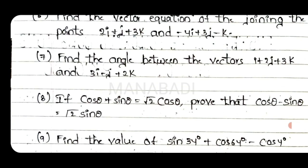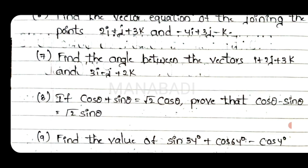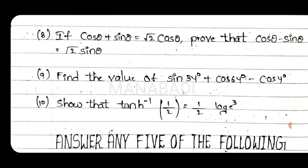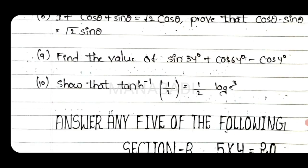Seventh question: Find the angle between the vectors i plus 2j plus 3k and 3i minus j plus 2k. Eighth question: If cos theta plus sin theta equals under root 2 cos theta, prove that cos theta minus sin theta equals under root 2 sin theta. Ninth question: Find the value of sin 34 plus cos 64 minus cos 4. Tenth question: Show that tanh inverse of half equals to half log 3.